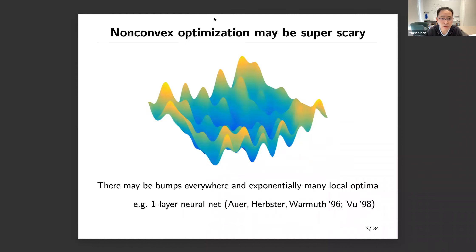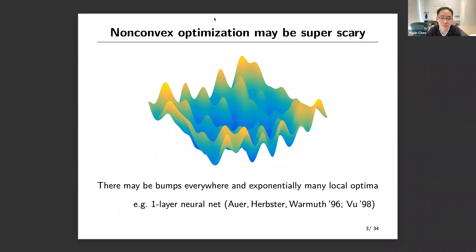As everybody knows, non-convex optimization is in general not easy to solve. Many problems could be NP-hard. More than two decades ago, people already showed that even for a one-layer neural net, you can design it to have an exponential number of local solutions, which is very problematic because it makes it very difficult to find a true global solution. This is usually cast as a very challenging problem in general.